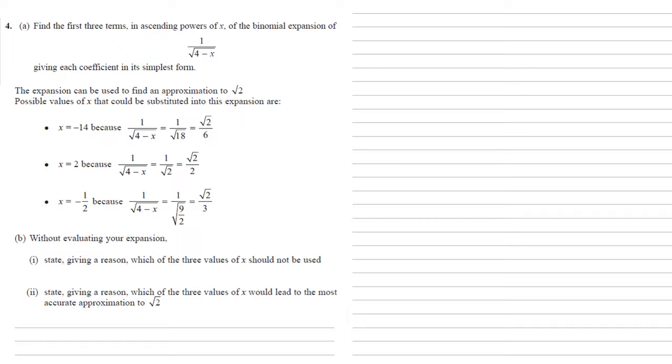The expansion can be used to find an approximation to root 2. Possible values of x that could be substituted into this expansion are x equals negative 14, x equals 2, and x equals negative a half. Now without evaluating our expansion, so without actually working out the answers, we're going to state giving a reason which of the three values of x should not be used.